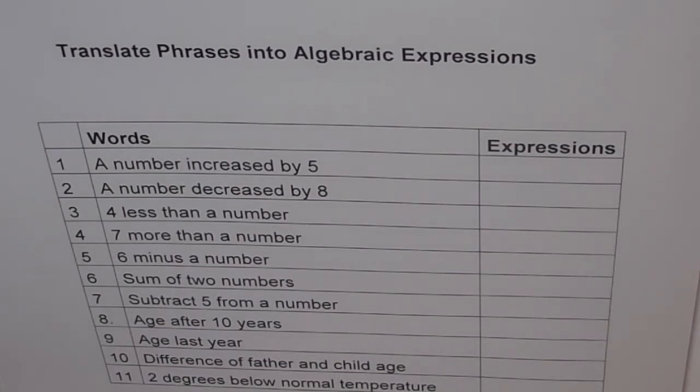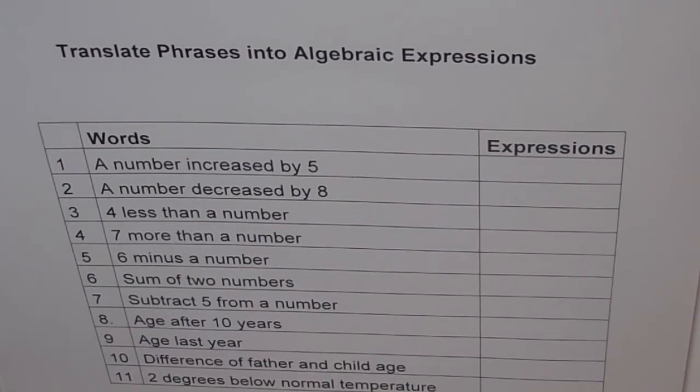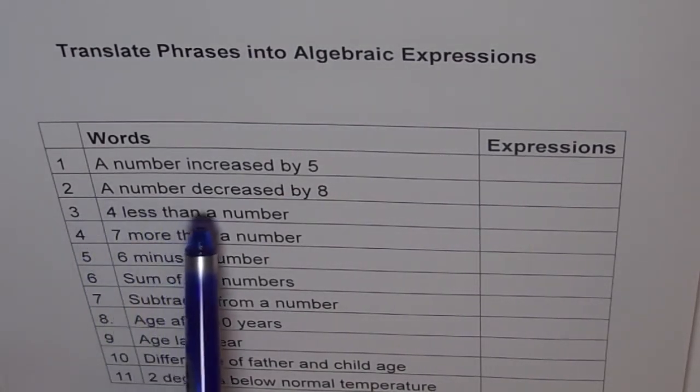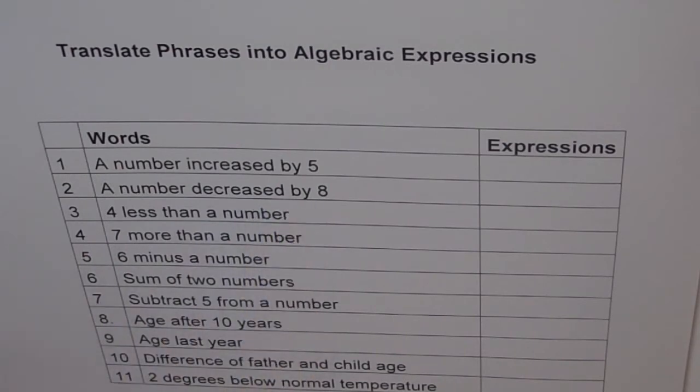Now look at these examples and try to write expressions for each. Let me read them out first for you. You can make a copy of this. One, a number increased by 5. So let the number be x and then increased by 5 will be x plus 5. Like that. So you can take number as x, a, b, n, any letter you want, preferably lower case.